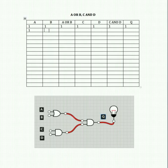Now let's turn A ON, B ON, C ON, and D OFF. A or B gives us 1. But C and D — with D off — that gives us 0. We're now feeding 1 and 0 into our AND gate, so that gives us 0.